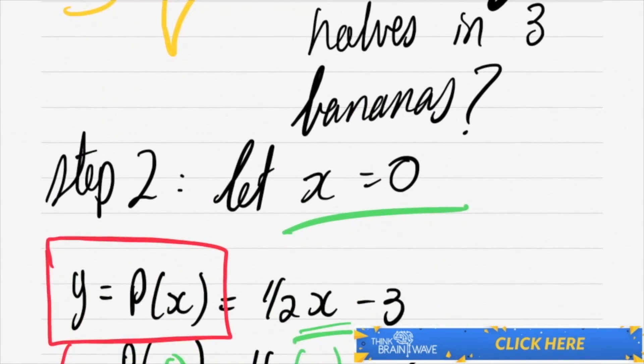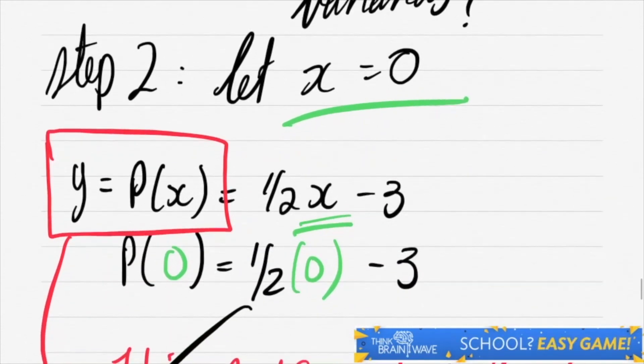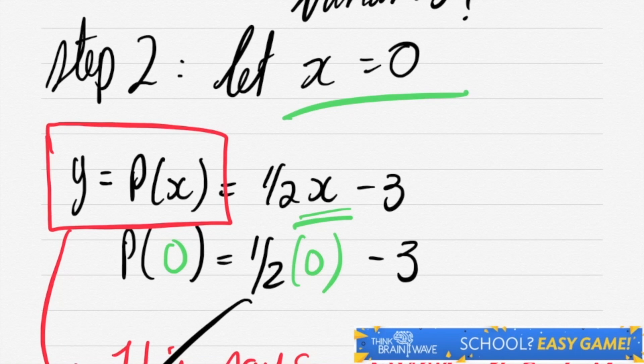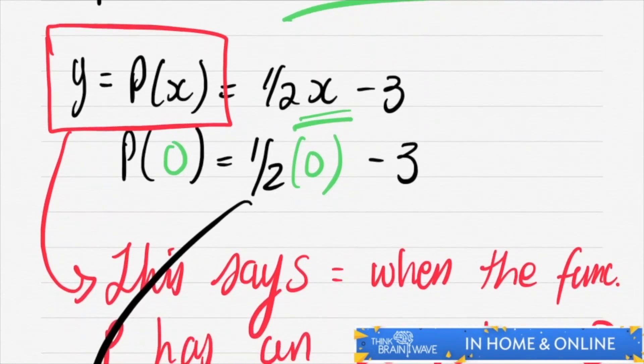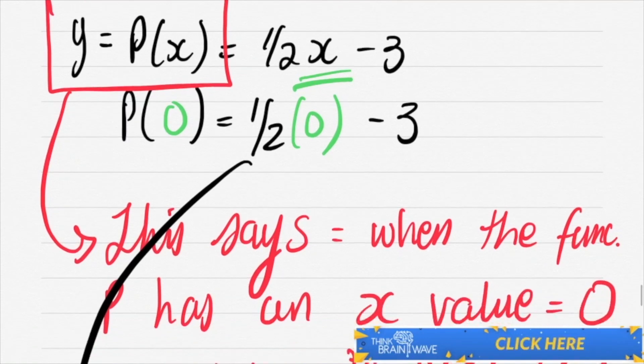Let's do step two. You say x is equal to zero. We plug it in. So we say half times zero minus three. The answer would be y is equal to minus three. So when x is zero, y is equal to minus three.